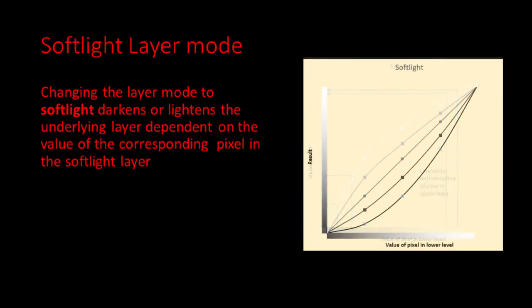Adding some intermediate grays into the graph, we can see that overall, if the upper layer is darker than mid-grey, the result is a darker image. If it is lighter than mid-grey, the result is a lighter image. And the effect is most prominent when the lower layer pixels are dark. We'll look at how we can apply this later in the video.